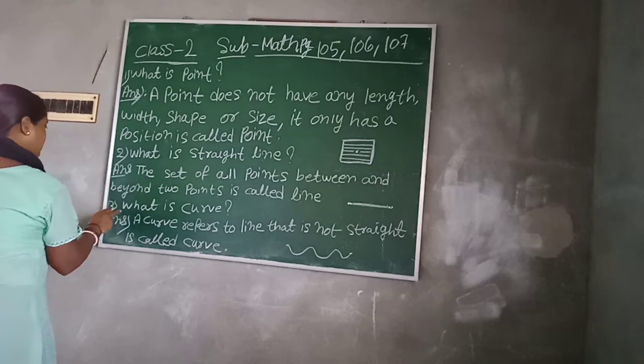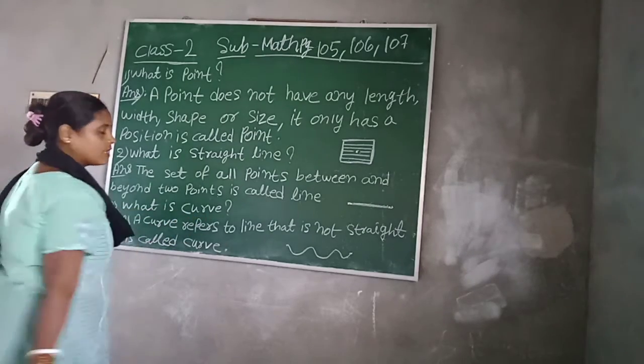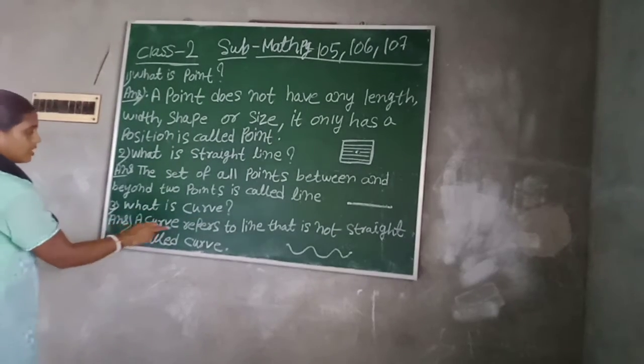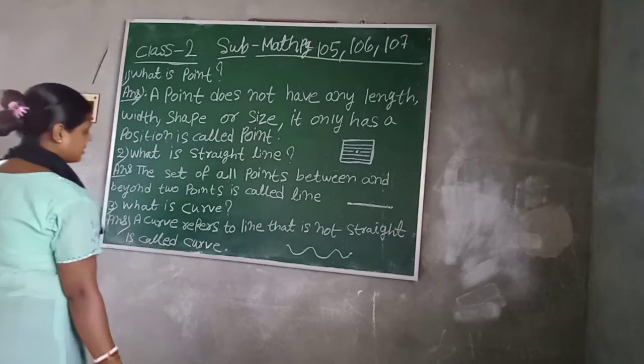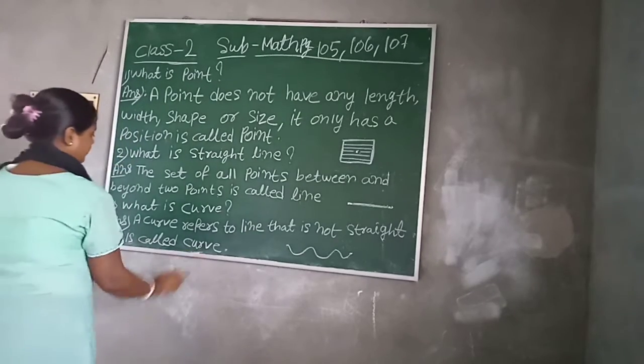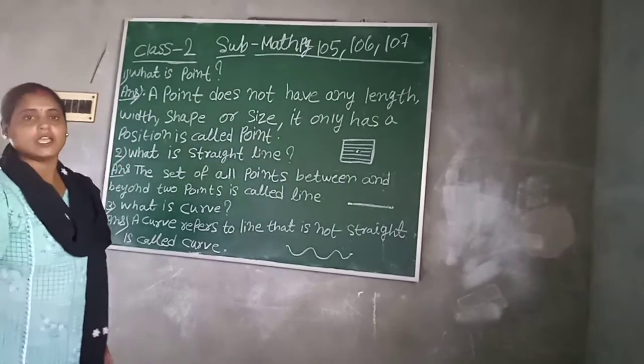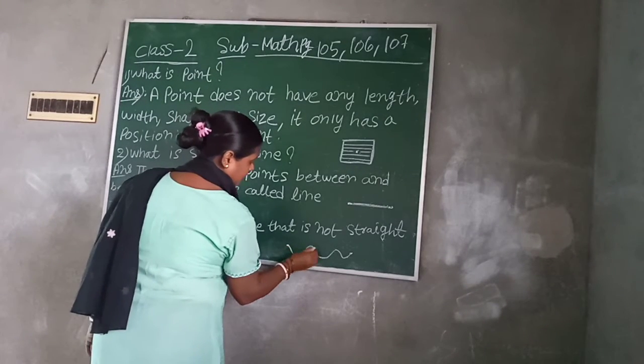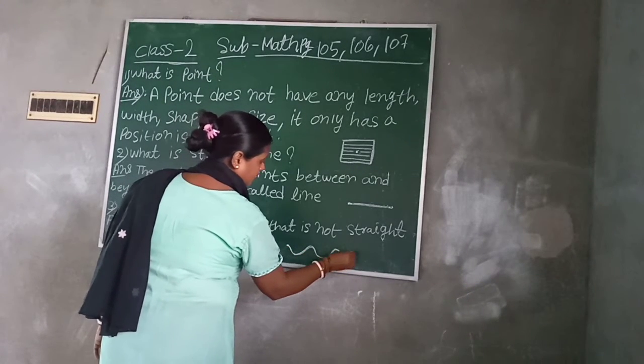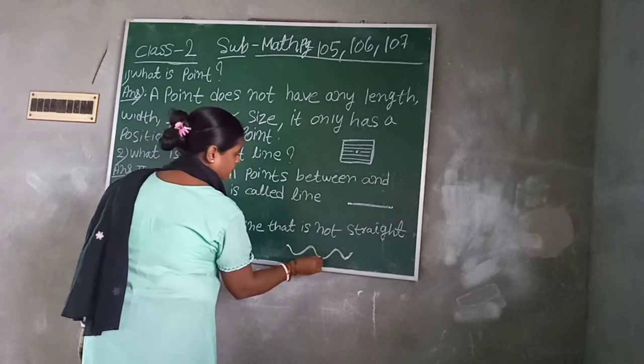Number three, what is curve? A curve refers to a line that is not straight. Look, there are three points. This line is called curve.